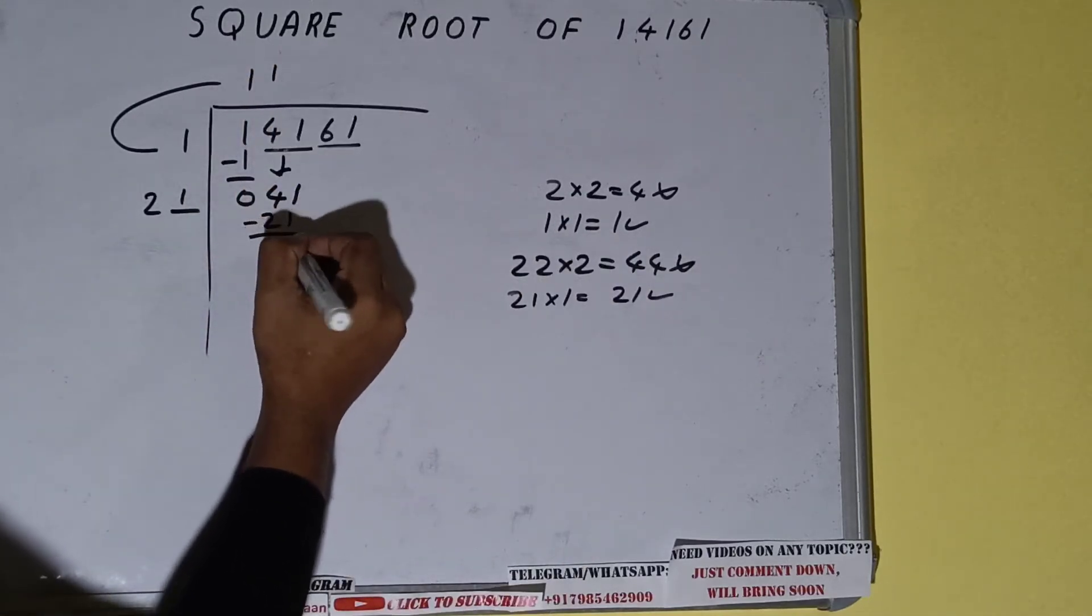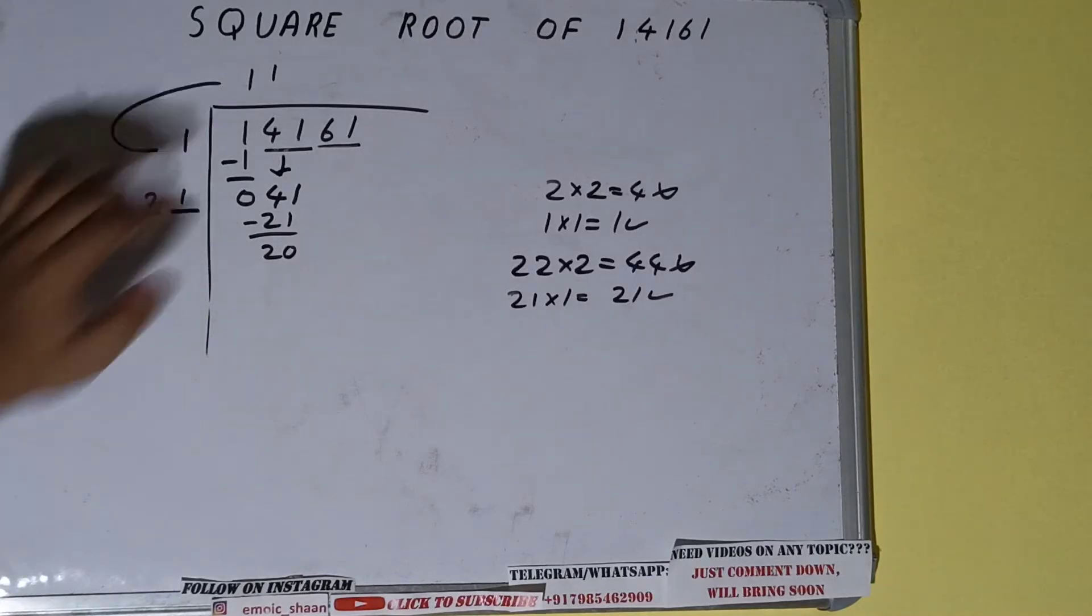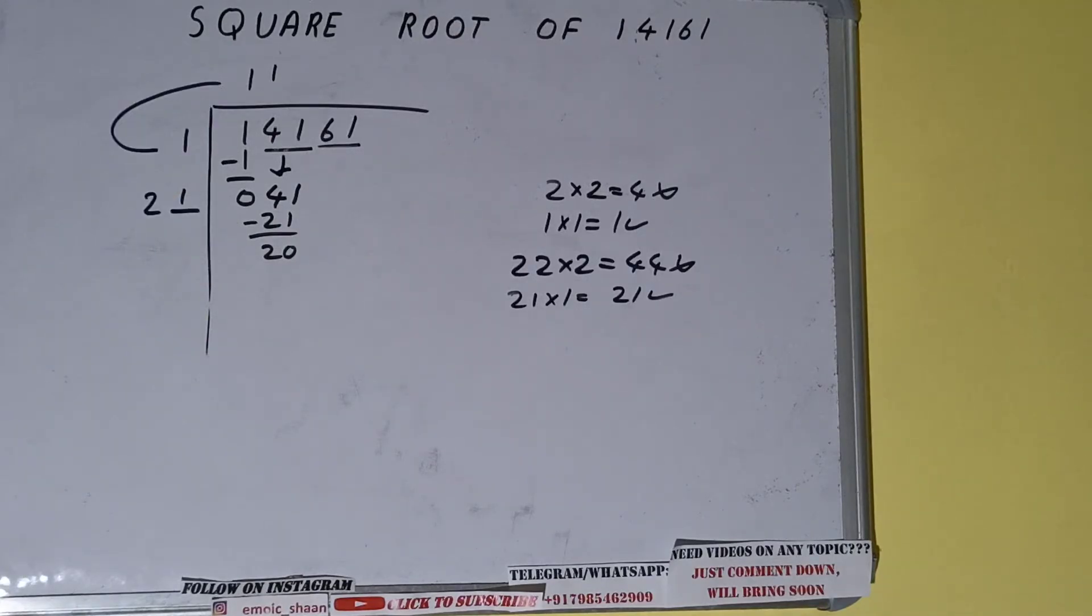So 1 here and 1 here. 21 subtract and 20 will be left. Now 21 into 1 we did, so add both. So 21 plus 1 will be 22.